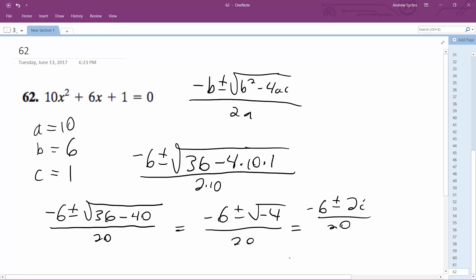And what we end up with is negative 3 over 10 plus or minus i over 10. That's it.